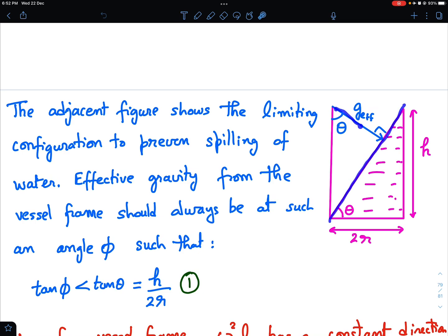At the verge of spilling, the effective gravity must be like this. And this angle is theta. And tan theta will be h by 2r when it is at the verge of slipping. Effective gravity from the vessel frame should always be at such an angle phi, such that tan phi should be less than tan theta. This angle theta is the angle at which it is at the verge of spilling. So, actually gravity should be such that this angle, this is less than theta. The actual angle phi is less than theta.